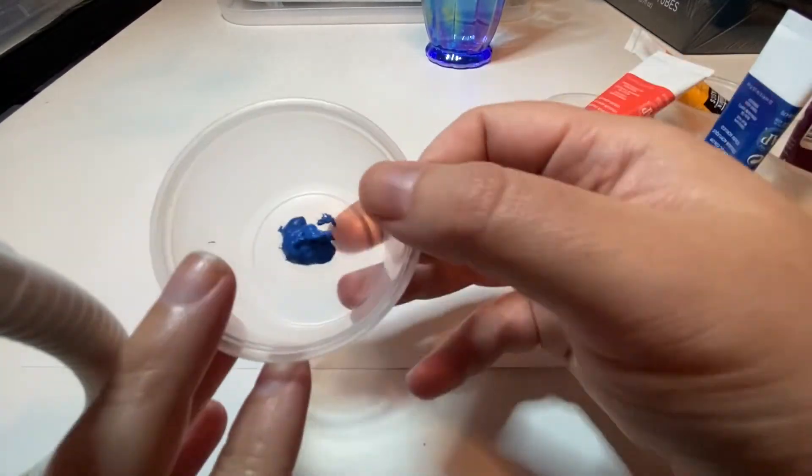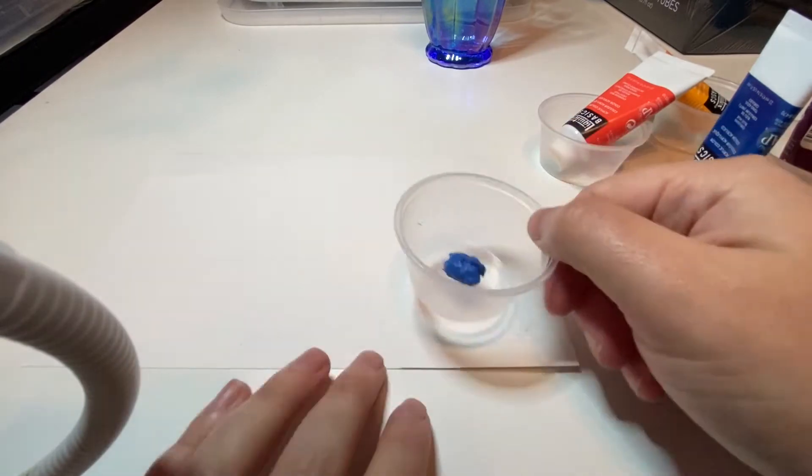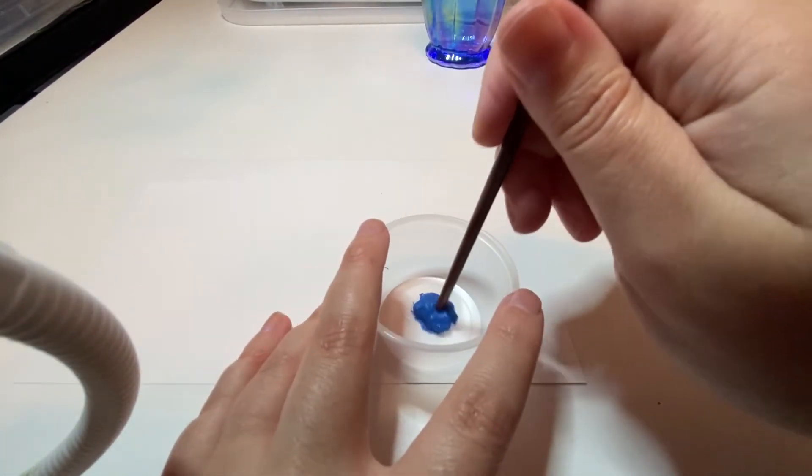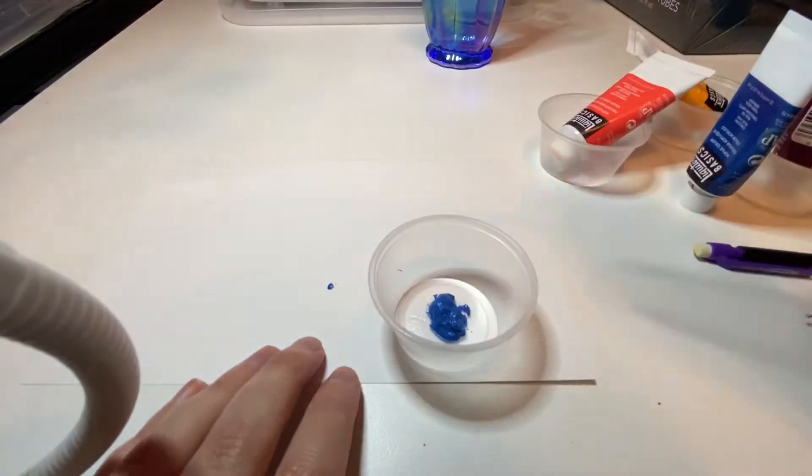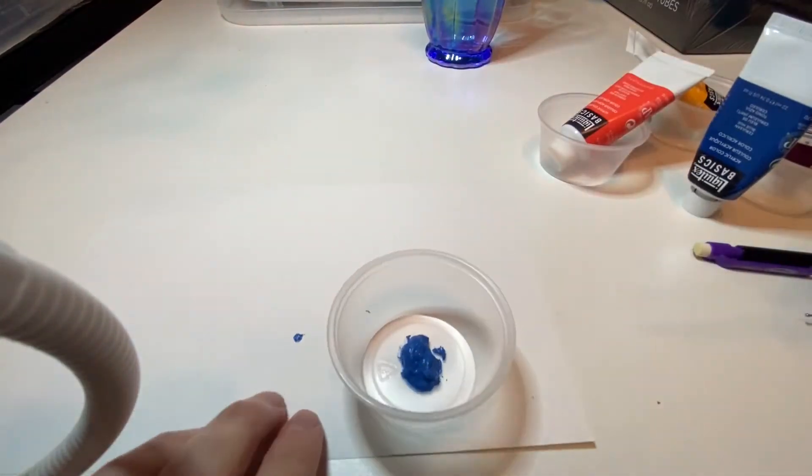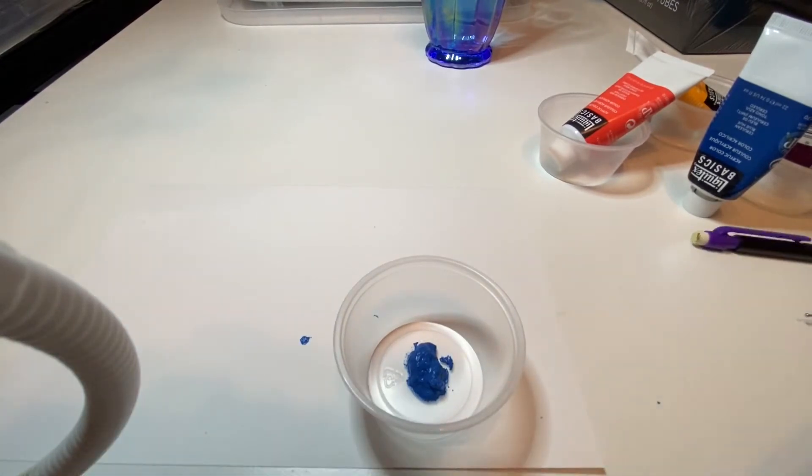So I'm just putting a little bit of paint in a reusable container. You want to use a little cup or something like that because if you use it on a paper plate or on a palette then it will run a bit.